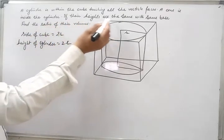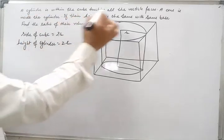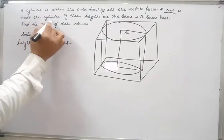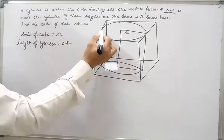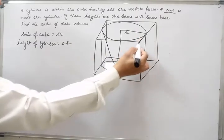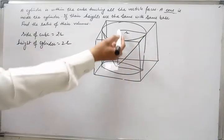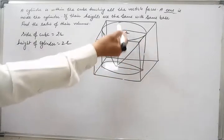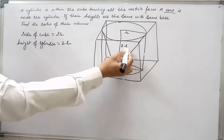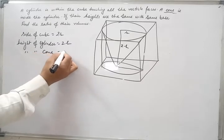Now, a cone is also inside the cylinder. The radius of the cone is also r, and the height of the cone is also equal to the side of the cube or the height of the cylinder, so it is also 2r.